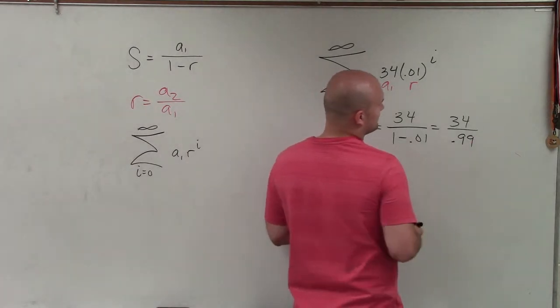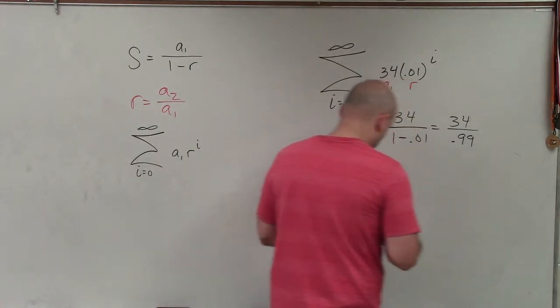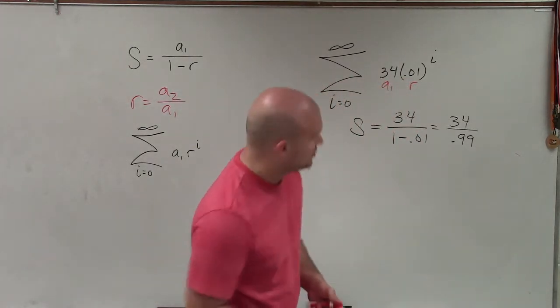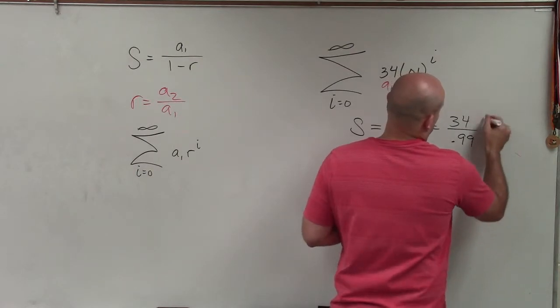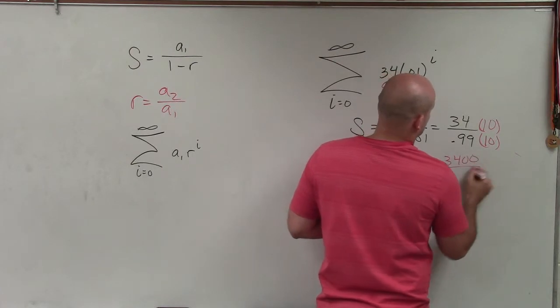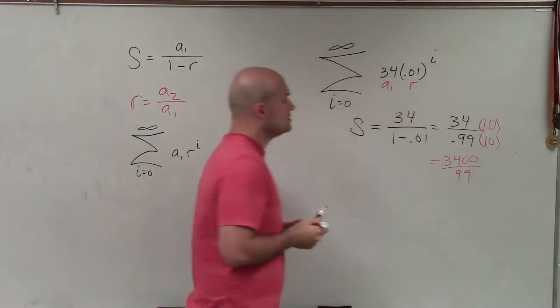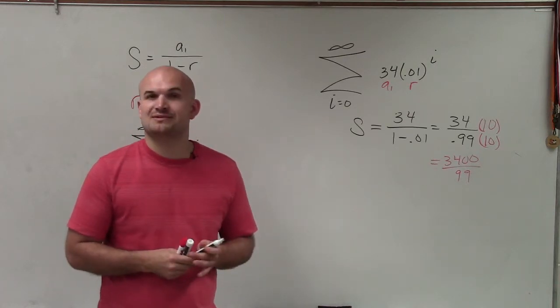So then what I would do to convert this into a fraction, I would not use this as a decimal. What I would do is multiply by 10 on the top and the bottom. And therefore, I get 3400 divided by 99. So there you go, ladies and gentlemen. That is how you find the sum of an infinite geometric sequence. Thanks.